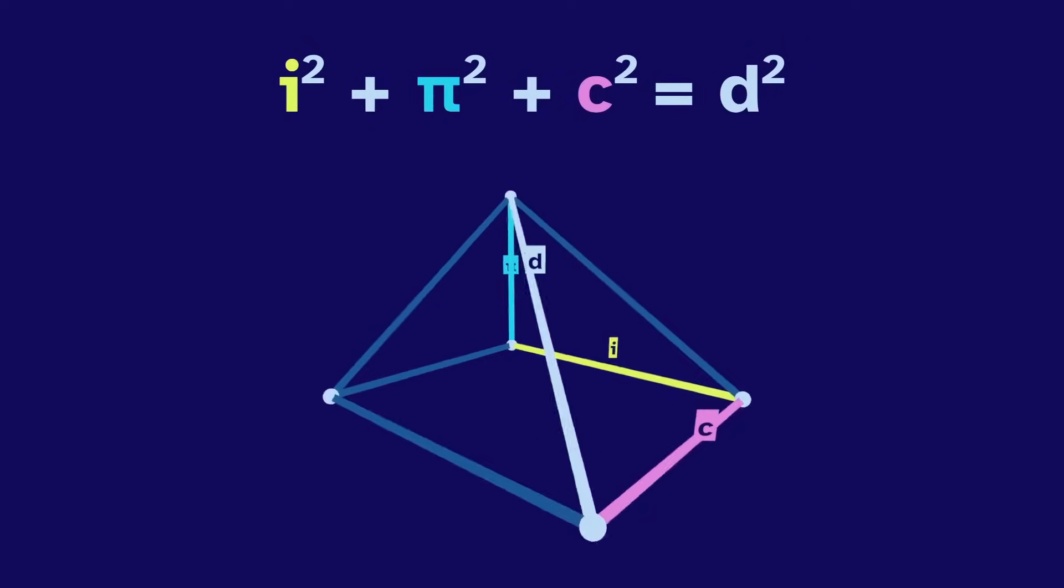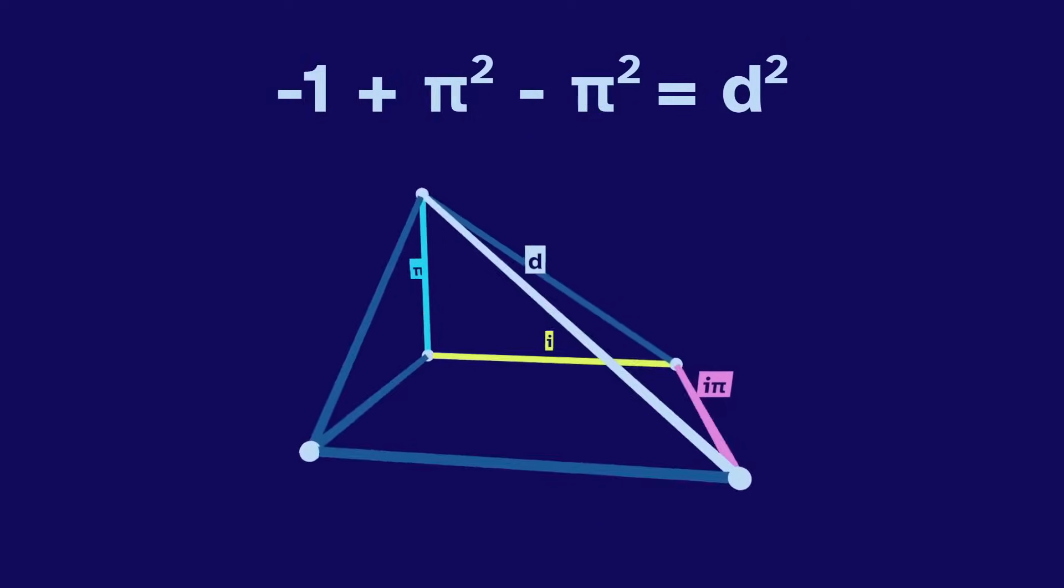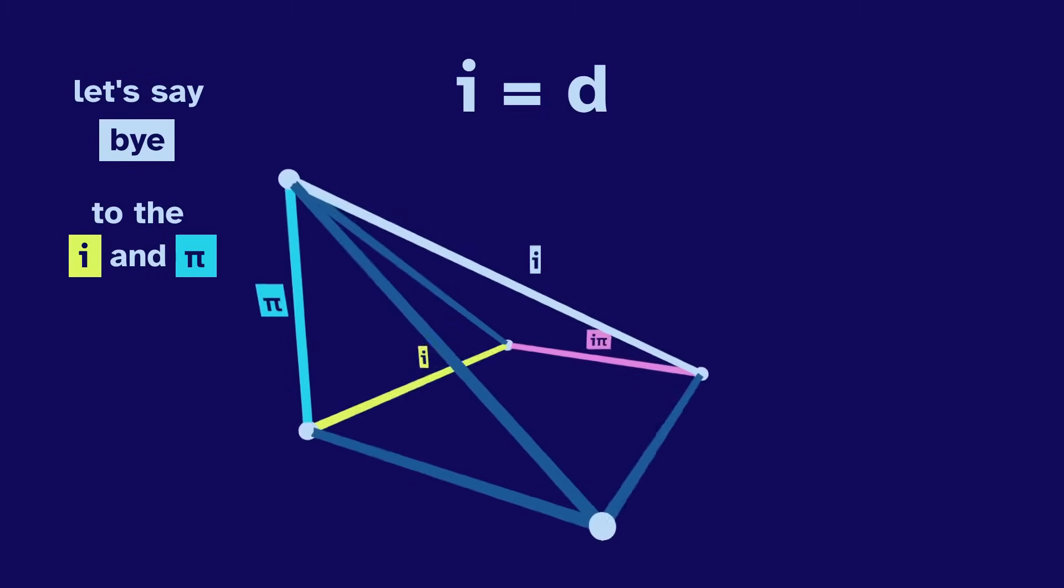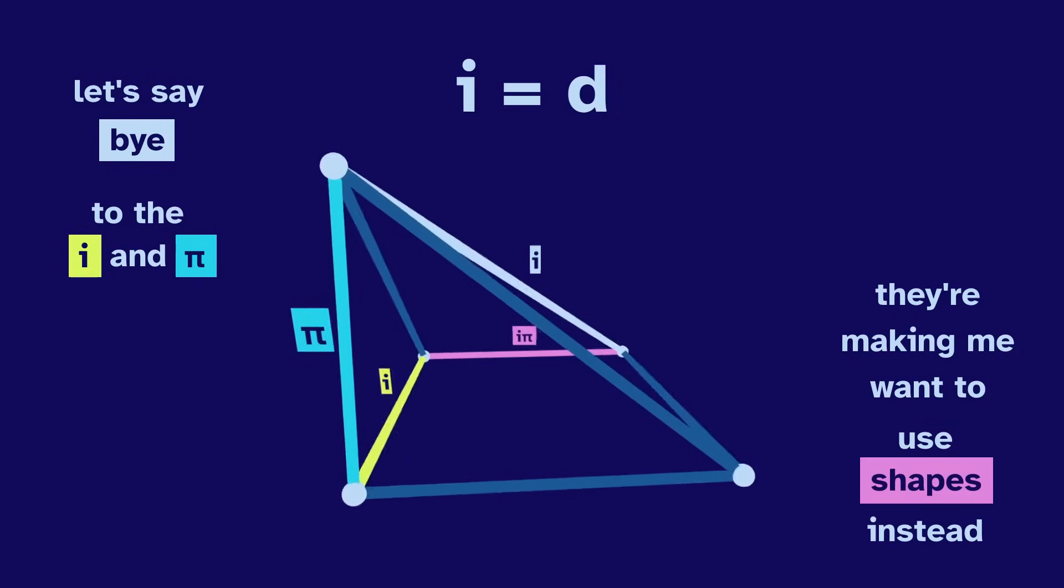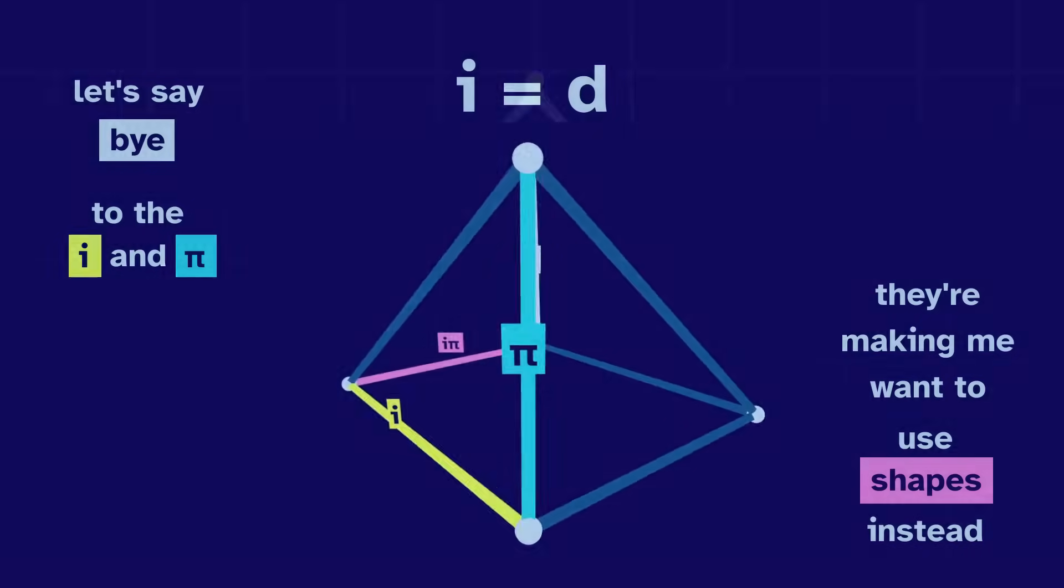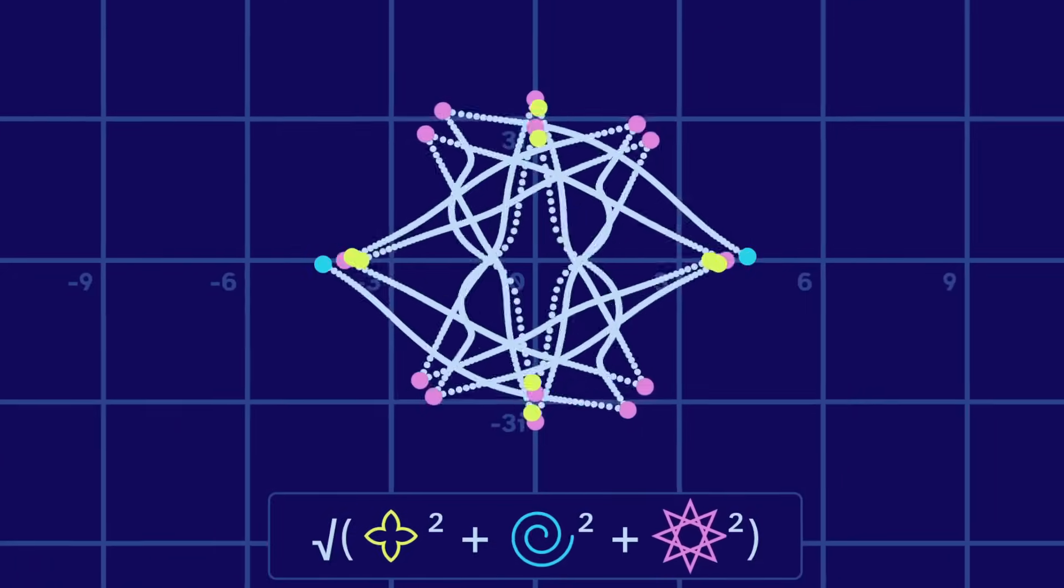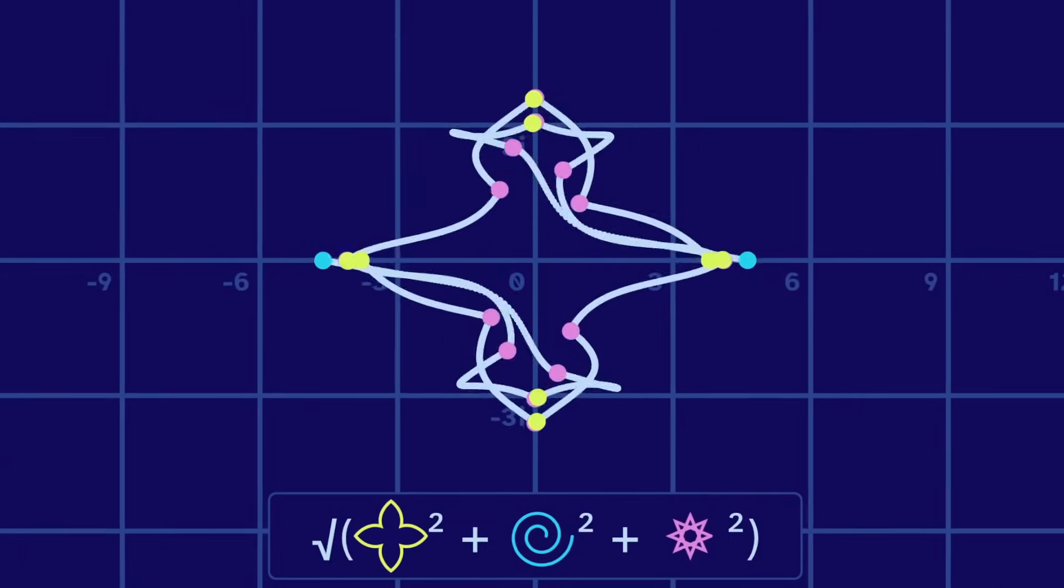Or if they're i, pi, and i pi, the diagonal will be i. But let's say bye to the i and pi. They're making me want to use shapes instead. Let's use a flower, spiral, and star.